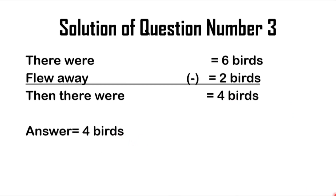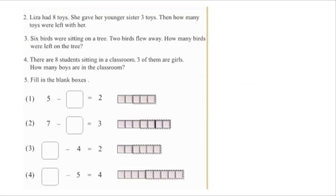That was a very simple math. I hope you all got the answer. Now we will try to solve question number 4. Let's go to the page. In question number 4 the author wrote: there are 8 students sitting in a classroom, 3 of them are girls — how many boys are in the classroom? You can see that 2 types of data are written here. It will also be a concept of subtraction.